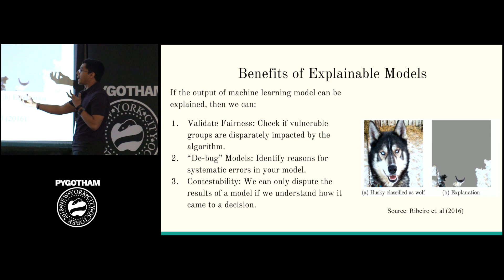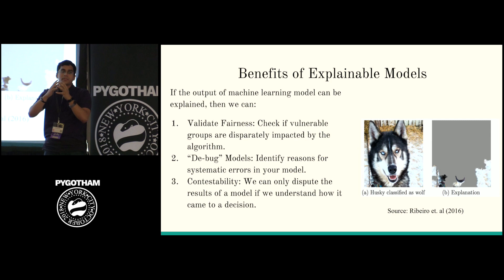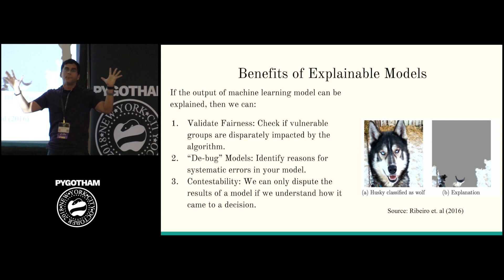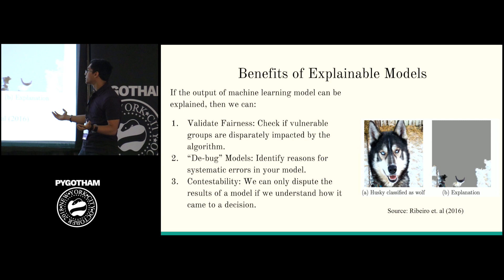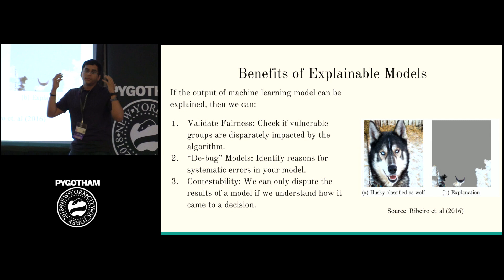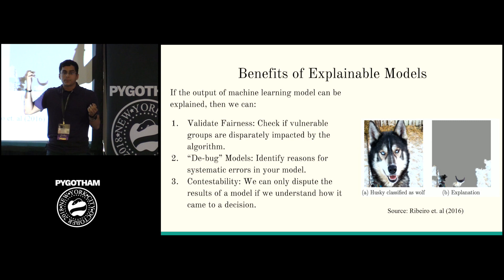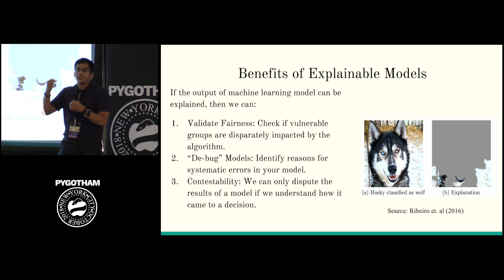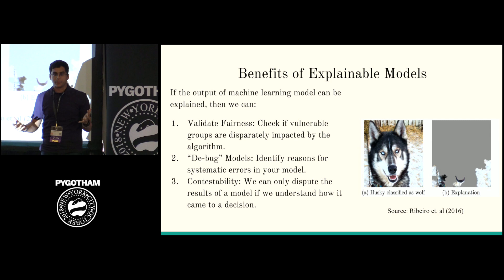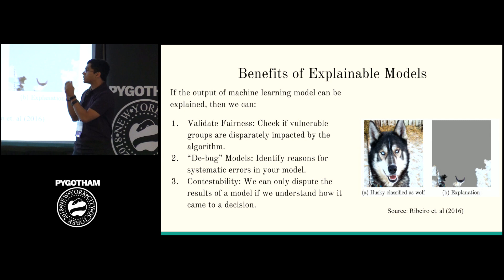That leads to the idea of contestability. These statistical algorithms have a magical veneer — 'it's an algorithm, it's unbiased, it's objective, it can't be wrong.' That's not true at all. These algorithms can be completely wrong and we should be able to dispute them. We should be able to say: I don't think we should be evaluating teachers based on their students' performance on standardized test scores because of this bias. If we don't know what the model is doing, you can't really dispute it.